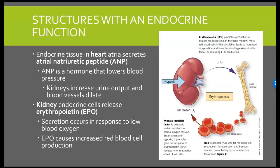Now let's talk about the heart. Within our heart atria — these would be our top chambers of the heart — it's going to secrete a hormone known as the atrial natriuretic peptide, or atrial natriuretic hormone. This is a hormone that helps to lower blood pressure. As blood pressure increases, stretch receptors in the atrial walls send a signal telling them to secrete ANP. In response, our kidneys increase urine output, and our blood vessels dilate in order to lower that blood pressure.